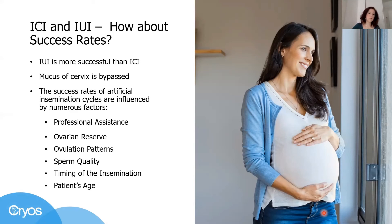The success rates of artificial insemination are influenced by numerous factors. For example, when you seek professional assistance, a fertility doctor is able to control and monitor the menstrual cycle, analyze hormone levels, and control the growth of the eggs and follicles by ultrasound scans. Another important factor that influences the outcome is the ovarian reserve.